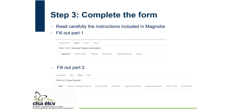After reading the instructions and understanding CLSA well, there's part one, which includes information from different tabs — the applicant, project team, timeline, description, and scientific review and ethics. Part two is the data checklist, where you select the data. And there's part three about bio samples, but it's not activated yet.